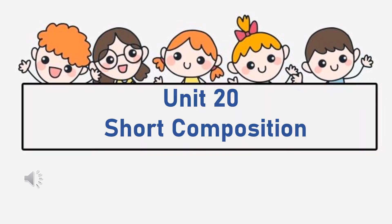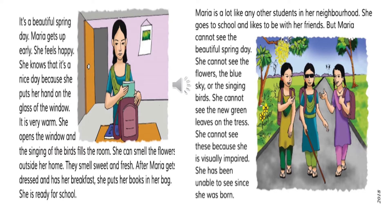Our today's topic is Unit 20. We had revised the whole Unit 20, and today we will discuss how to write a short composition regarding this unit. In a previous session, we had learned about a girl named Maria. She had been visually impaired since her birth, but she had loved to go to school and liked to spend time with her friends.